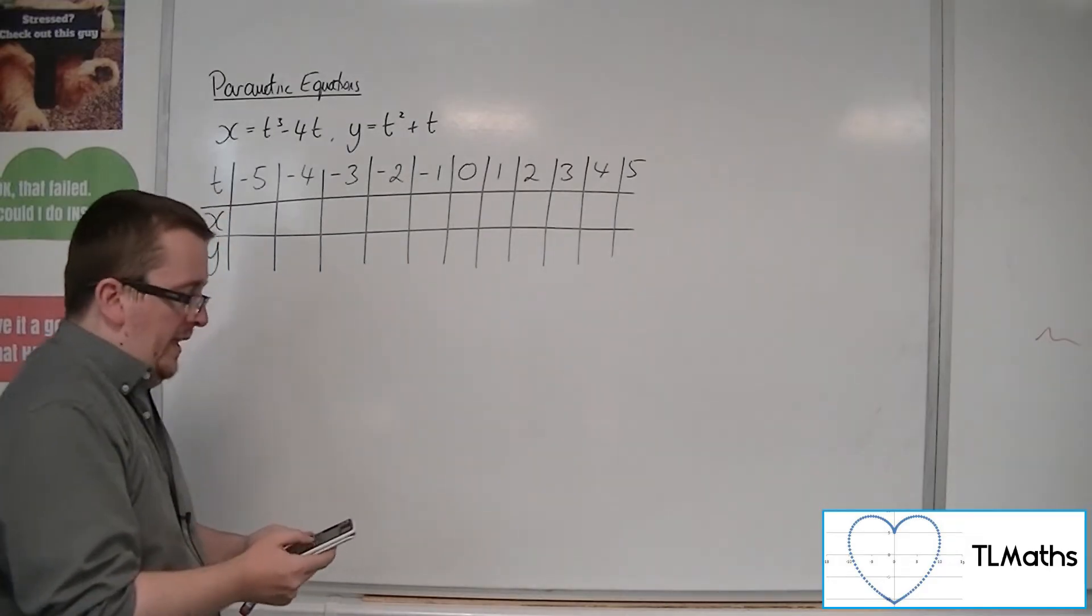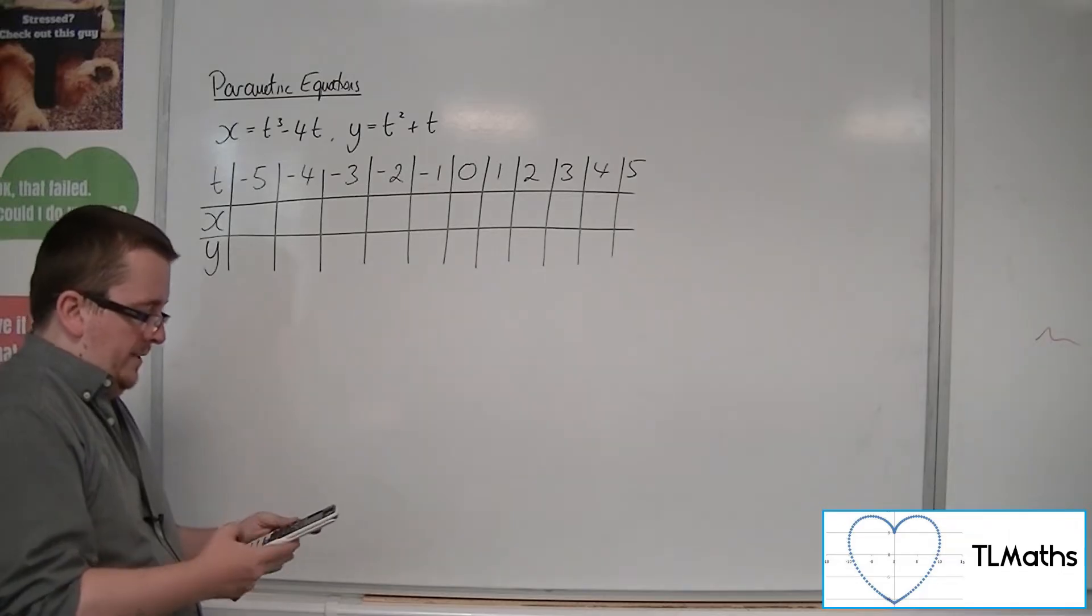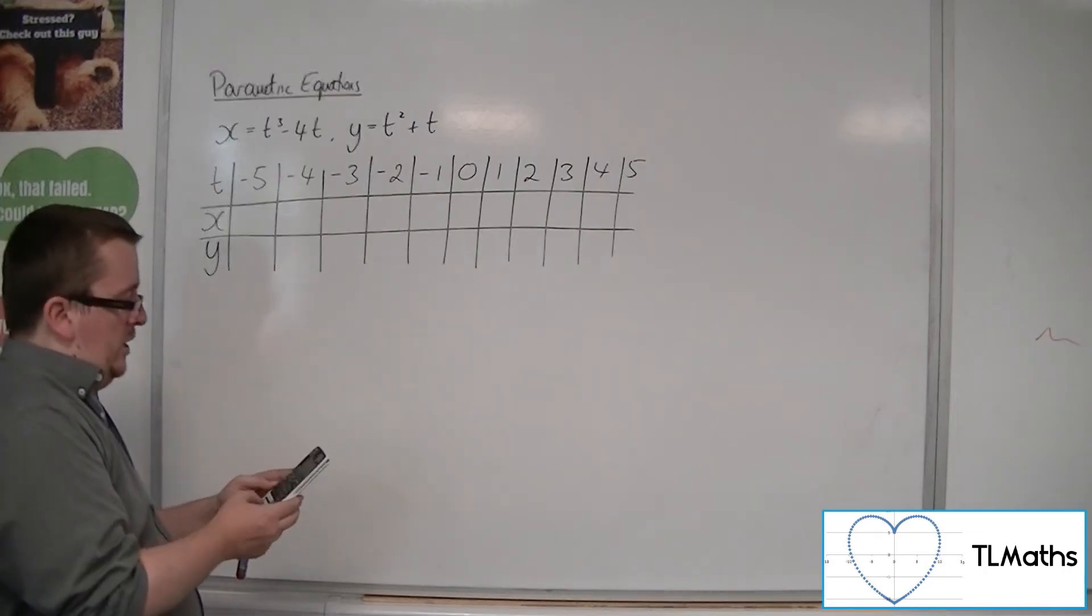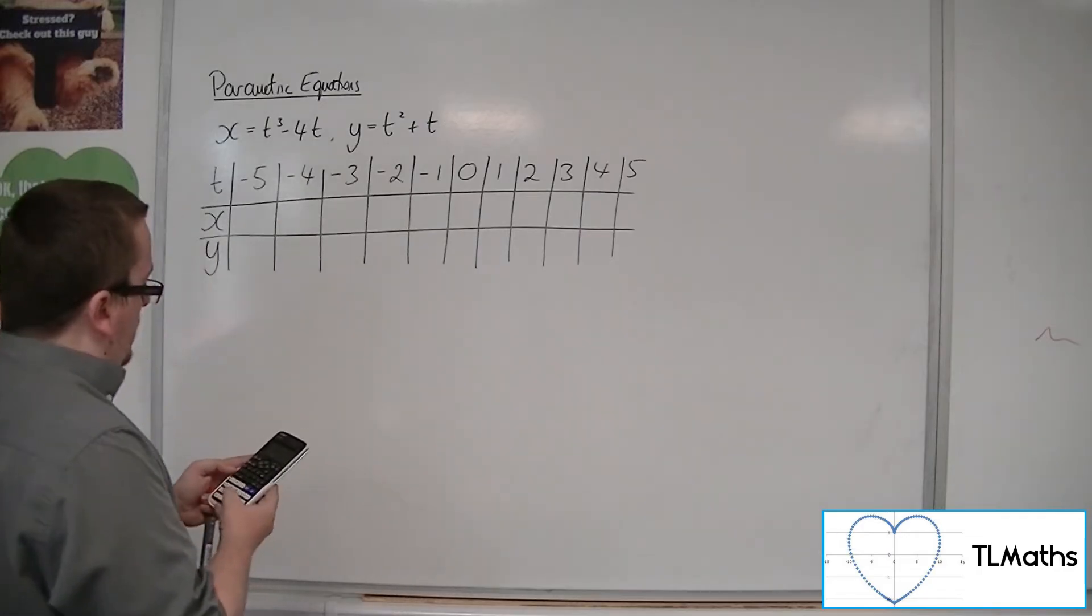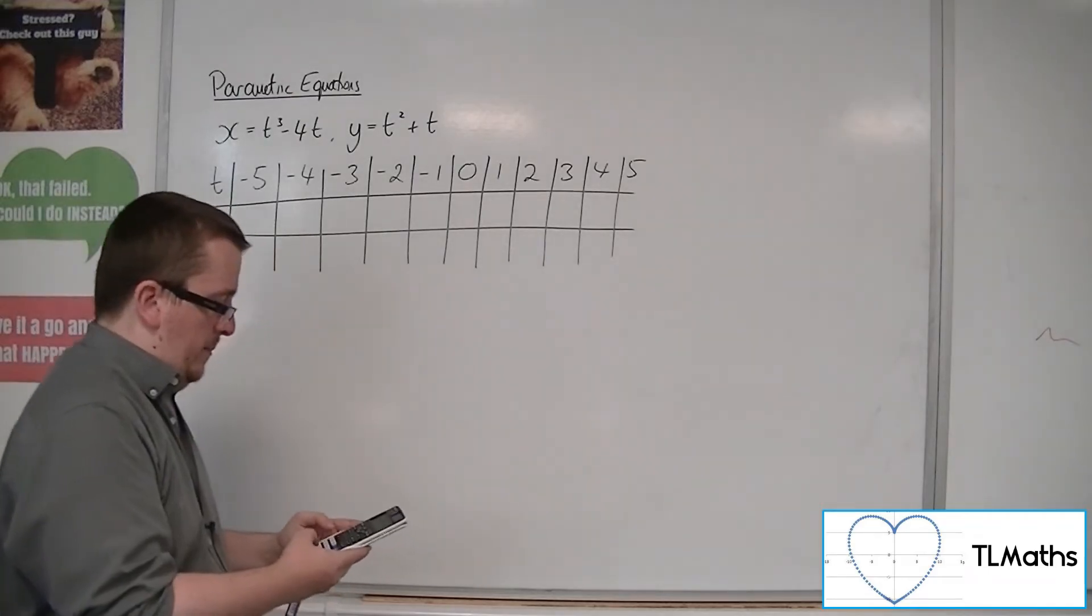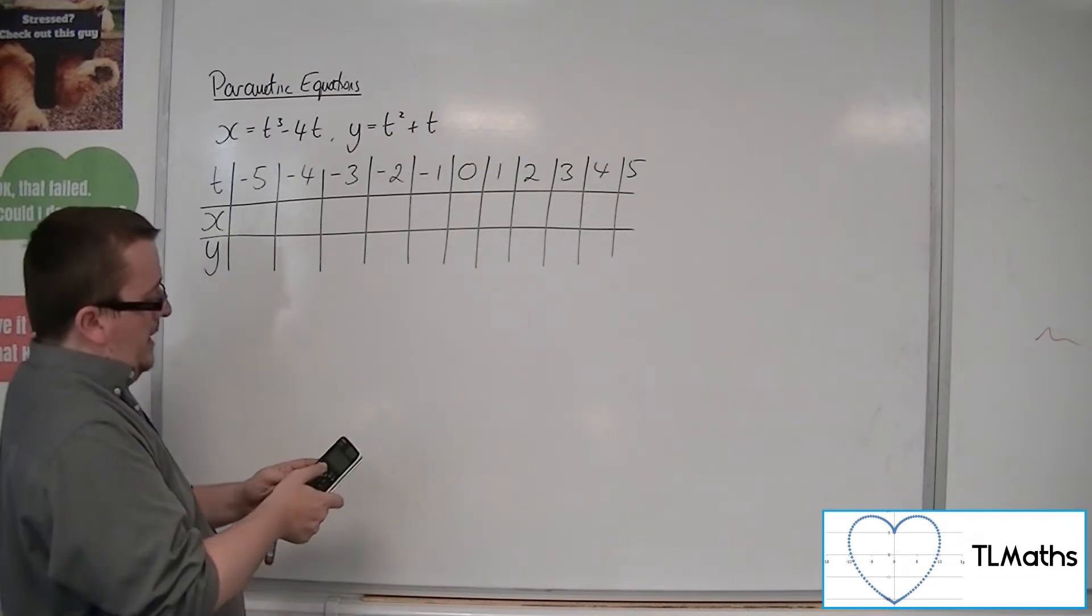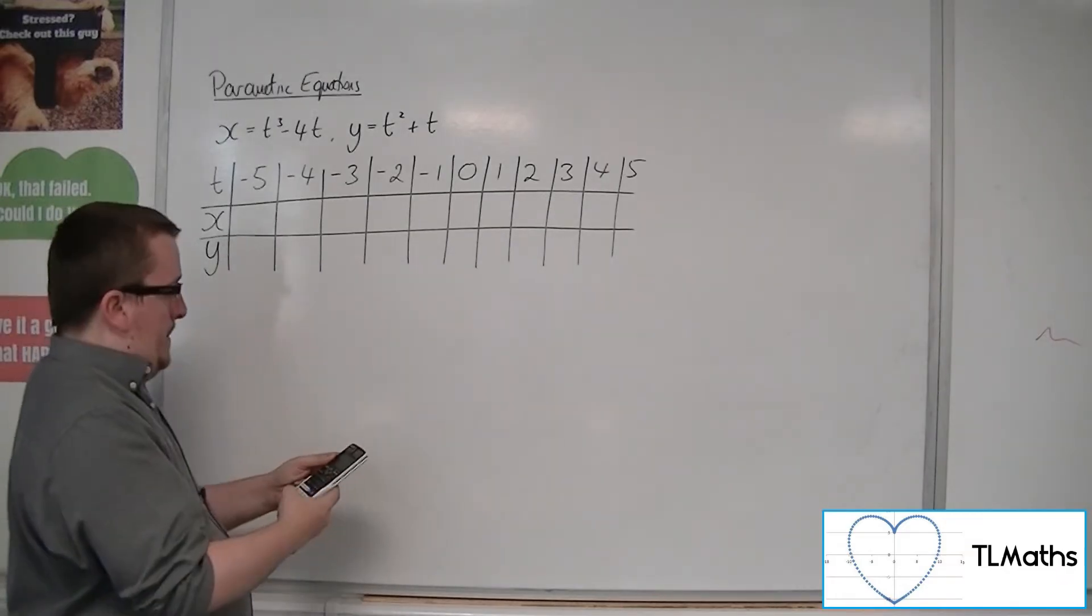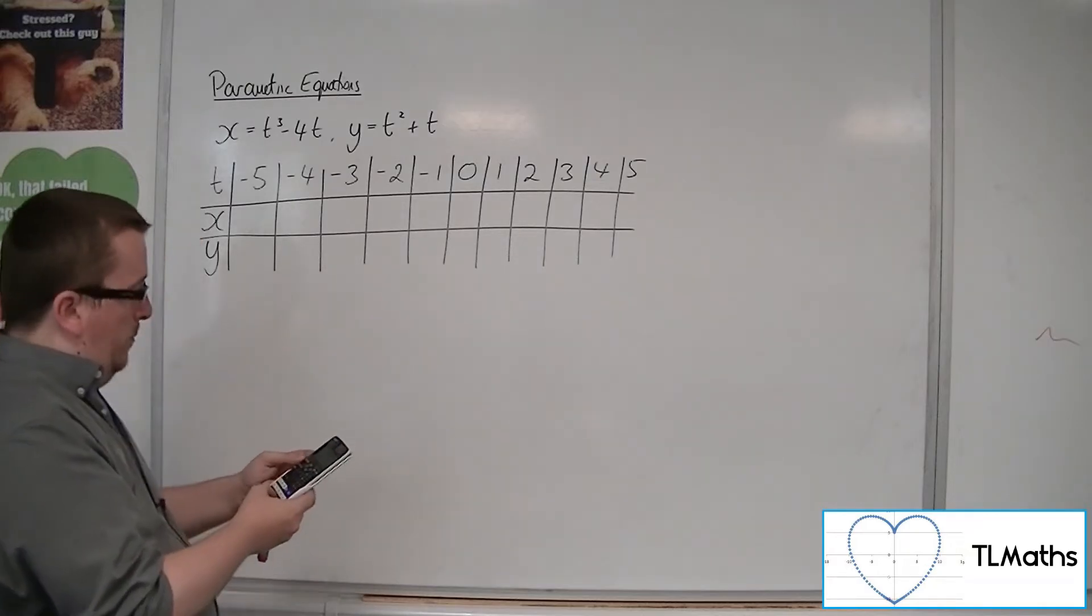So we could use the table function on your calculator in order to do this to speed up time. So type in t cubed minus 4t. If I go back, because you can set up as 2 in this. So t cubed, so x cubed, take away 4x in this case, and then your g of x can be x squared plus t.